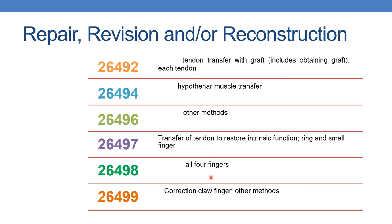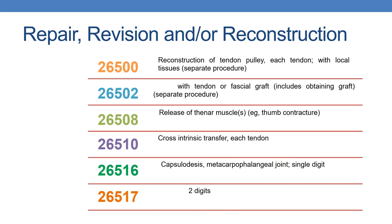Next is 26497: transfer of tendon to restore intrinsic function, ring and small finger. For all four fingers it is given by 26498. Next is 26499: correction, claw finger, other methods. The next is 26500: reconstruction of tendon pulley, each tendon, with local tissues. Reconstruction of tendon pulley with tendon or fascial graft is reported with 26502.